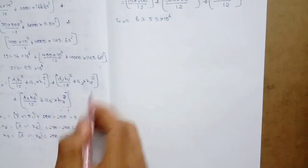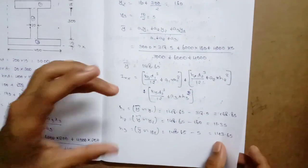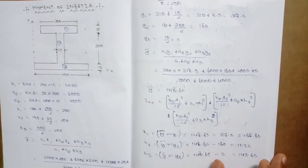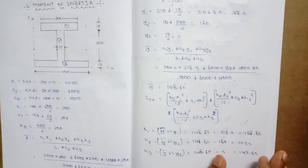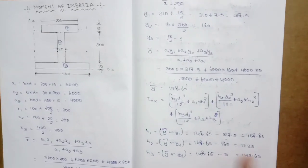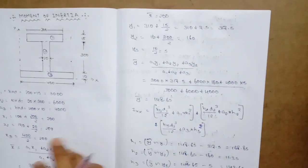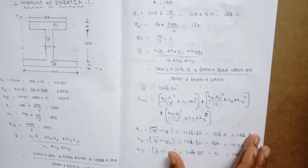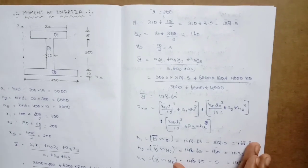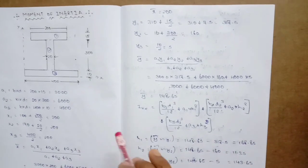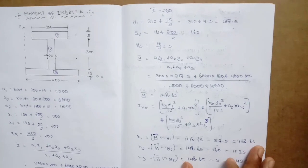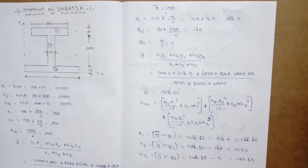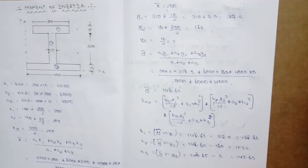We have calculated the second moment of inertia for the I-section — first the centroid X-bar and Y-bar, then Ixx and Iyy. This is a very important problem, worth 8 marks. Thank you, friends.